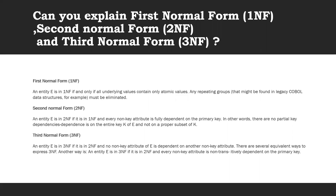Can you explain first, second, and third normal form? An entity is in first normal form if and only if all underlying values contain only atomic values and any repeating groups are eliminated. An entity is in second normal form if it is in first normal form and every non-key attribute is fully dependent on the primary key — in other words, there are no partial key dependencies, and dependence is on the entire key of the entity and not on a proper subset of the key.